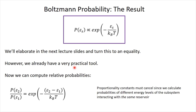We can already compute relative probabilities with this expression. If you're interested in two different energy levels accessible to the subsystem — call them E_2 and E_1 — then the relative probability of finding the subsystem with those energies is e to the minus energy splitting divided by k_B T. The proportionality constants in the main formula cancel in the ratio, because you're doing this calculation for a generic subsystem energy in equilibrium with the same reservoir T, so whatever comes out front will always cancel. We'll actually prove that explicitly in the next slides.